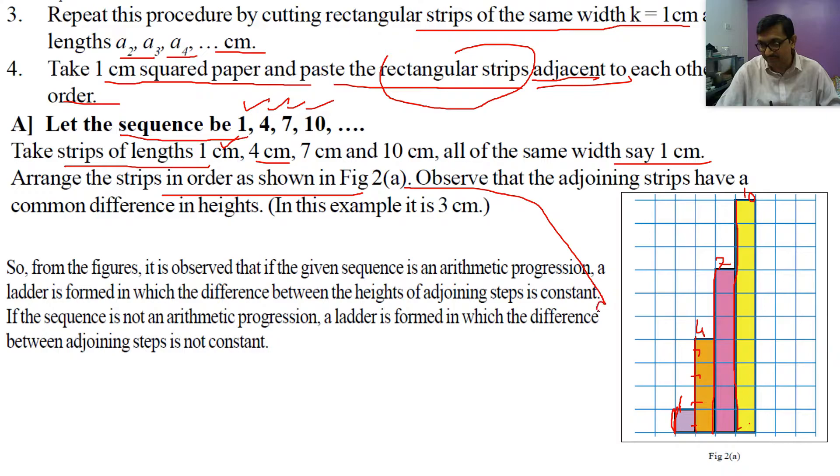Arrange the strips in order as shown in figure 2A. This is our figure 2A. Observe that the adjoining strips have a common difference in heights. In all these strips, a common difference is coming. See, 4 minus 1, the difference is 3. 7 minus 4, the difference is 3. 10 minus 7, the difference is 3.